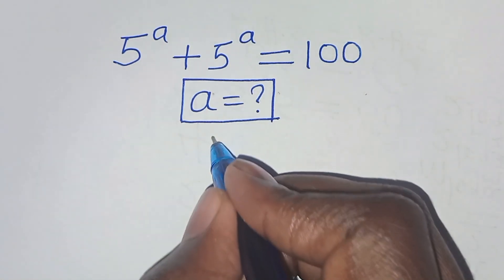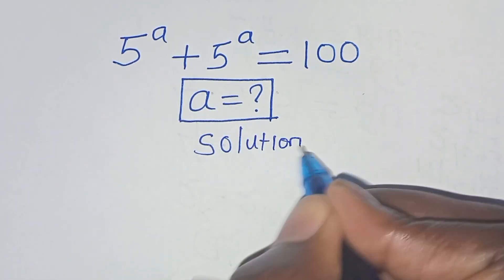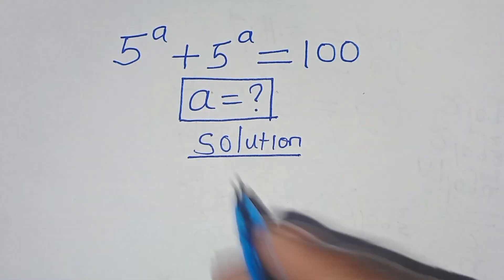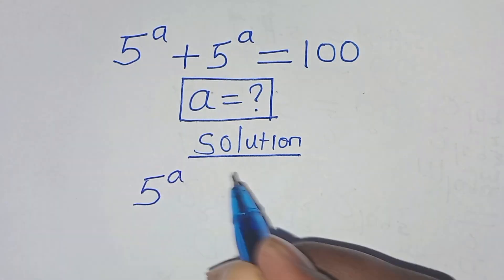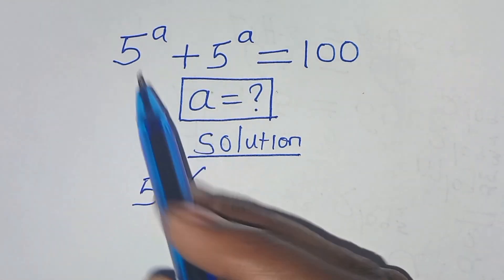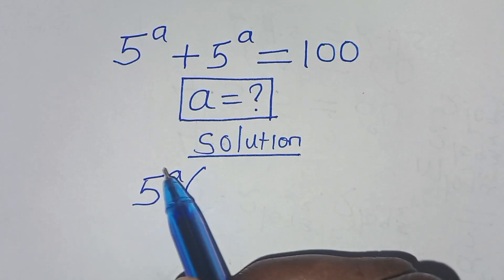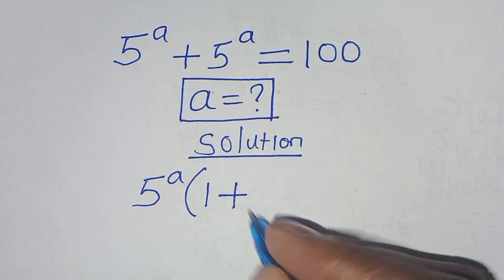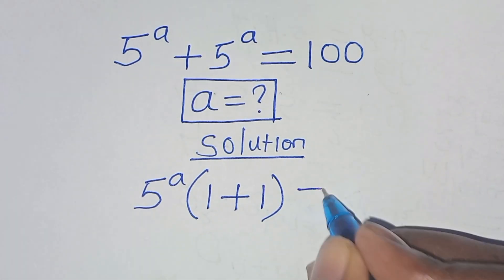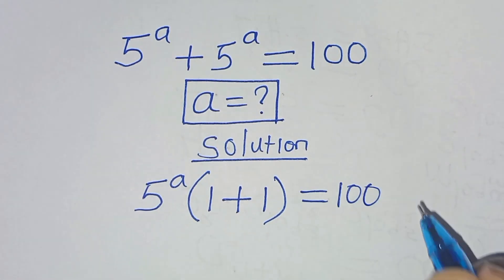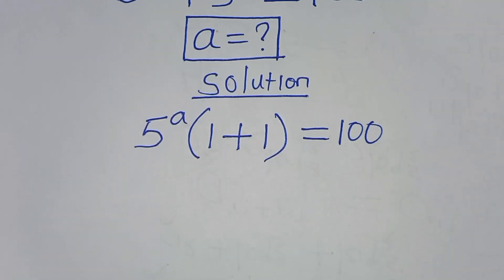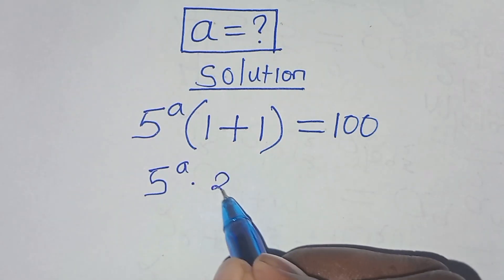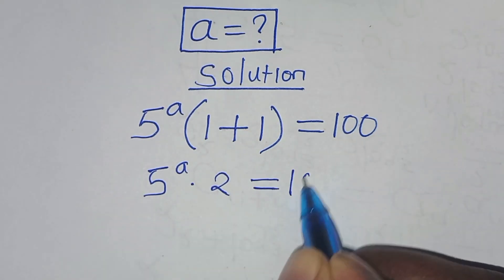So let's present a solution from here. If you check here, 5 to power a is common, so we can factor out 5 to power a, so that here we'll have 5 to power a divided by 5 to power a, this is 1, plus 5 to power a divided by 5 to power a, this is 1, this is equal to 100. The next step is that we have 5 to power a times 1 plus 1, this is 2, then this is equal to 100.